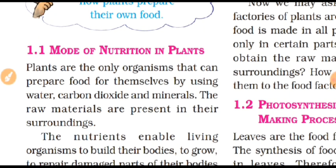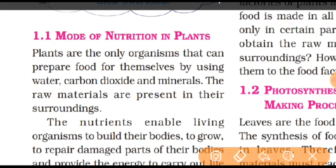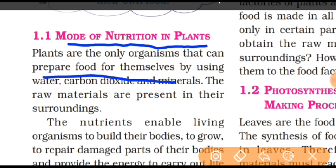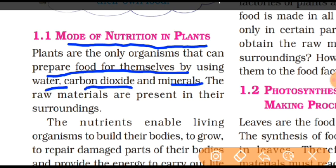The mode of nutrition in plants — what are the essential nutrients or food components for growth and development, and where can plants obtain them? Plants are the only organisms that can prepare food for themselves by using water, carbon dioxide, and minerals.